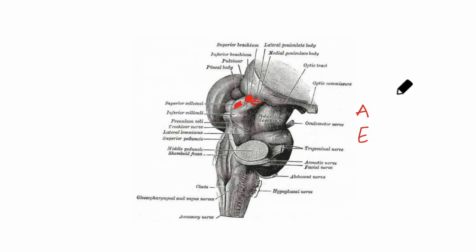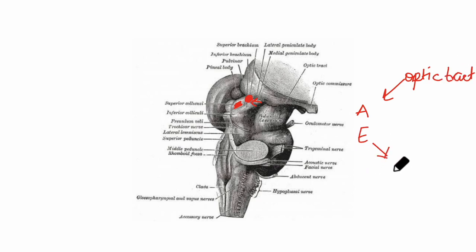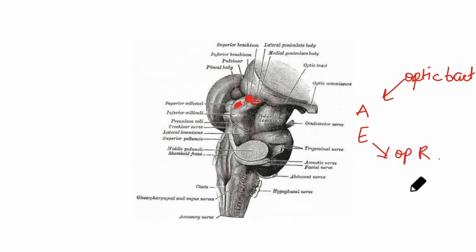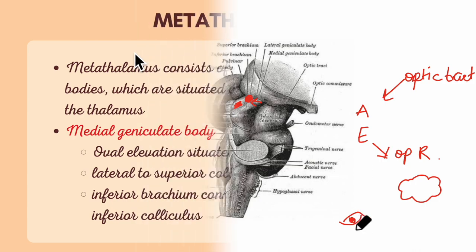It receives afferent impulses from the optic tract — that is, from the visual pathway. It sends out efferent fibers, mainly the optic radiation, that goes to the visual area of the cerebral cortex. The function of the lateral geniculate body is that it is the last relay station on the visual pathway to the occipital cortex.